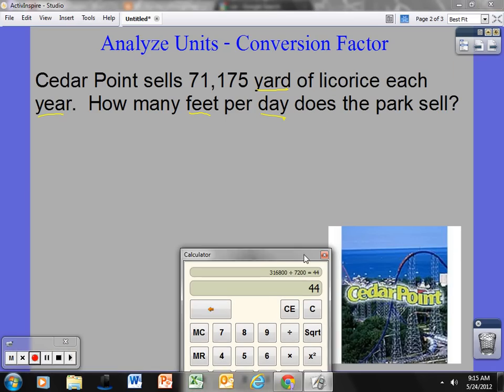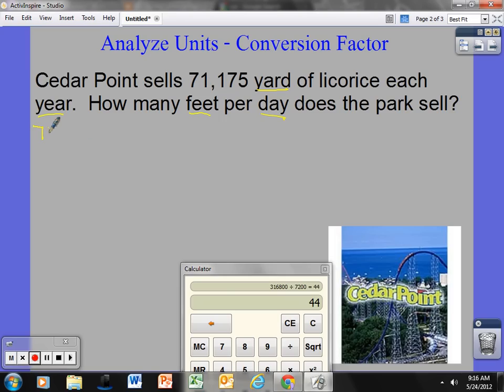Here I need to go from yards to feet and years to just one day. If I look at this problem, I'm going to start with what they originally gave me. 71,175 yards are sold in one calendar year. I know Cedar Point's not open for the whole year, but we'll just pretend it is for the sake of this problem. I need to determine how I'm going to get this to become feet per day. I need to convert yards to feet and years to days, so measurement to measurement, time to time. I'm going to get rid of the time first. I know that one year has 365 days.